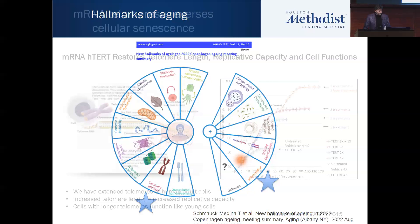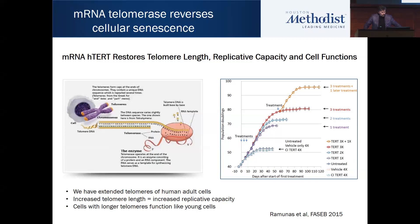We've previously shown that mRNA telomerase can extend the lifespan of human cells. In one paper, we doubled the lifespan of a human fibroblast — just three treatments of mRNA telomerase over a period of a week could increase the replicative capacity of senescent fibroblasts. And even after they became senescent again, adding mRNA telomerase allowed them to start to replicate again.